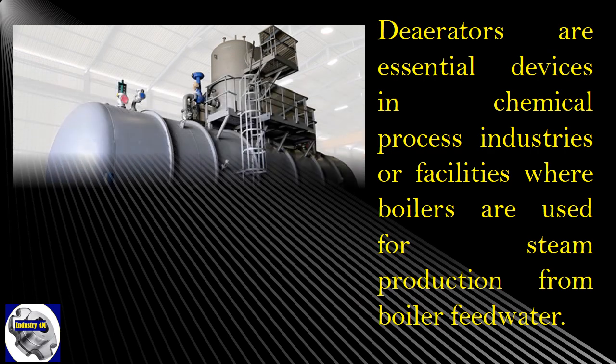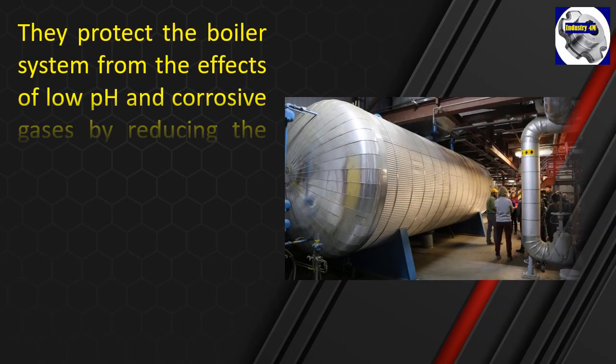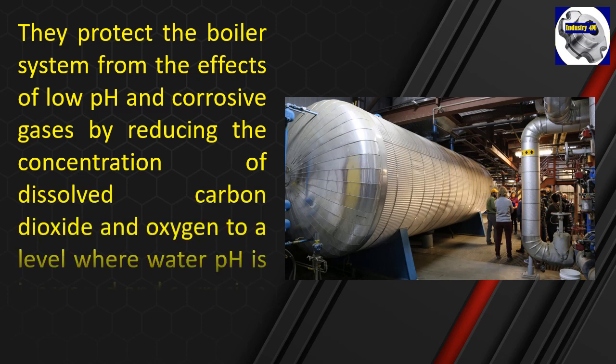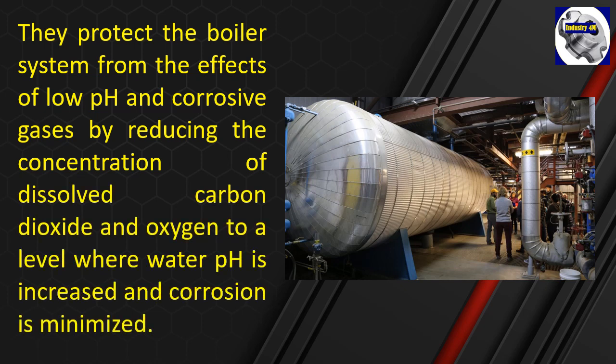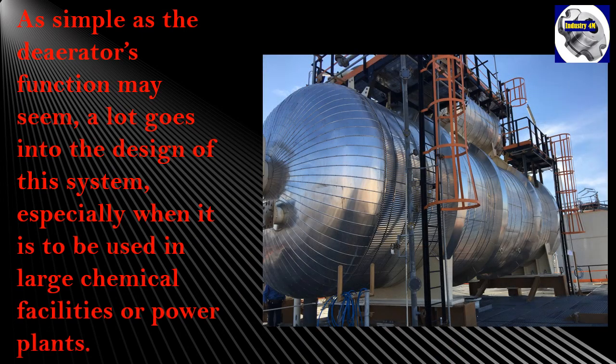Deaerators are essential devices in chemical process industries or facilities where boilers are used for steam production from boiler feed water. They protect the boiler system from the effects of low pH and corrosive gases by reducing the concentration of dissolved carbon dioxide and oxygen to a level where water pH is increased and corrosion is minimized. As simple as the deaerator's function may seem, a lot goes into the design of this system, especially when it is to be used in large chemical facilities or power plants.